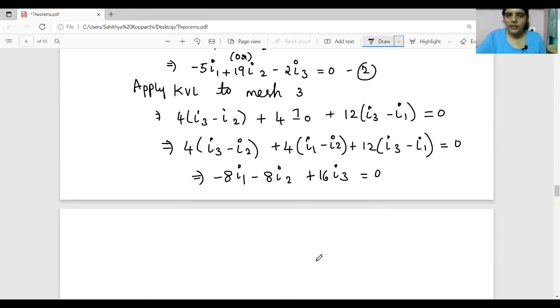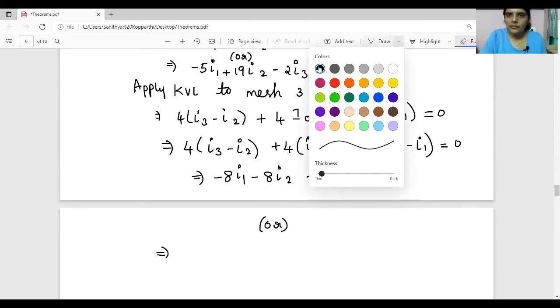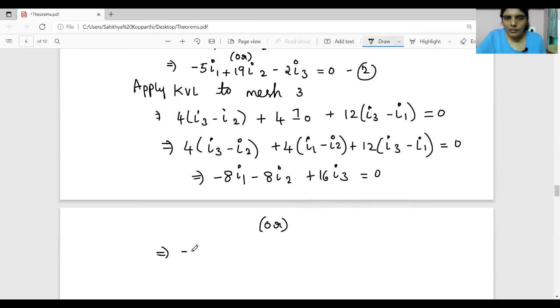Divide this whole equation by 2: -4I1 - 4I2 + 8I3 = 0. Or divide by 2 again: -2I1 - 2I2 + 4I3 = 0. This is equation 3.